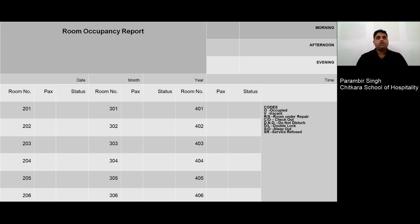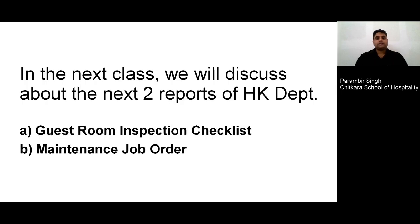At the bottom of the sheet, once all floor reports are entered, it is signed by the housekeeping department and sent to the front office department. Front office then tallies it with their records, and in case any mismatch occurs, they generate a discrepancy report. The discrepancy report is basically a mismatch between the housekeeping physical check and the front office occupancy report. That's all for today. In the next class, we will discuss the next two reports — guest room inspection checklist and maintenance job order.